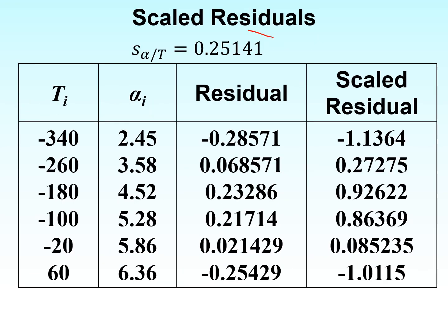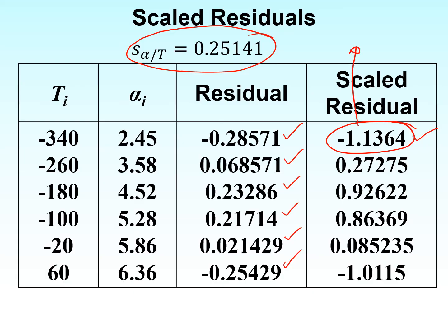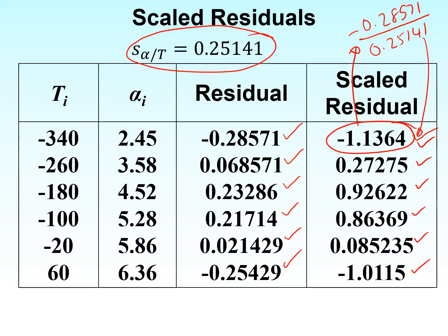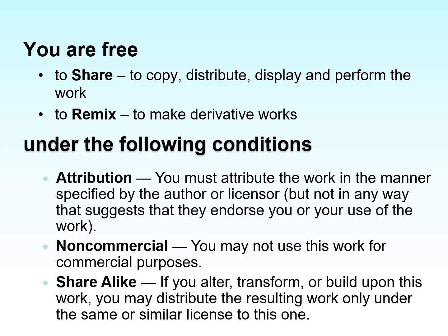Our standard error estimate is 0.25141. We calculate each scaled residual — for example, minus 0.28571 divided by 0.25141. All six scaled residuals are between minus 2 and plus 2, so it meets check number 2: 95% of the scaled residuals are between minus 2 and plus 2. That's the end of this segment on check number two.